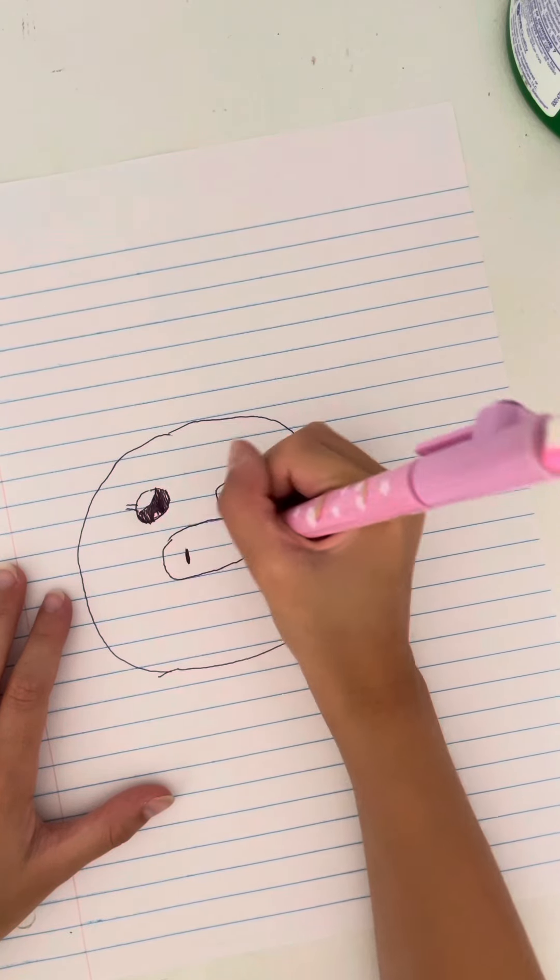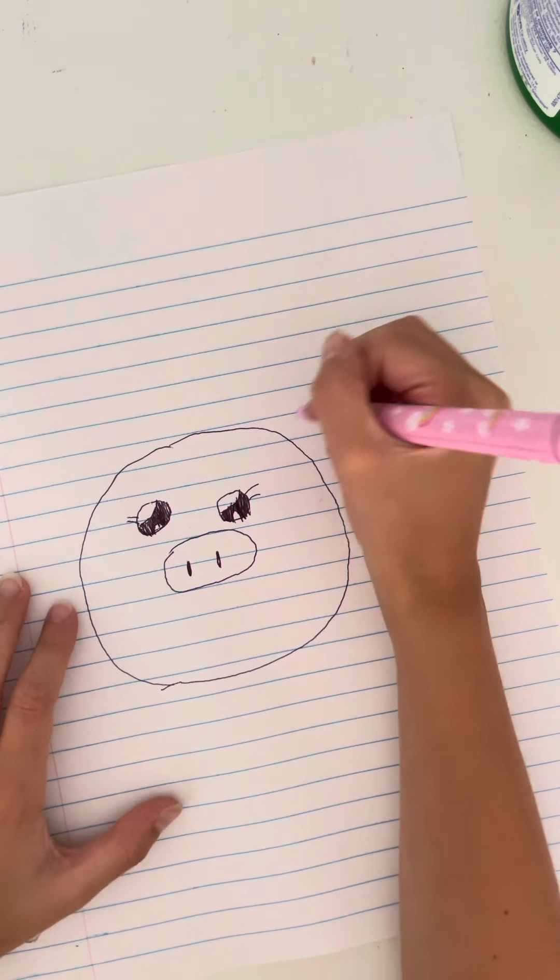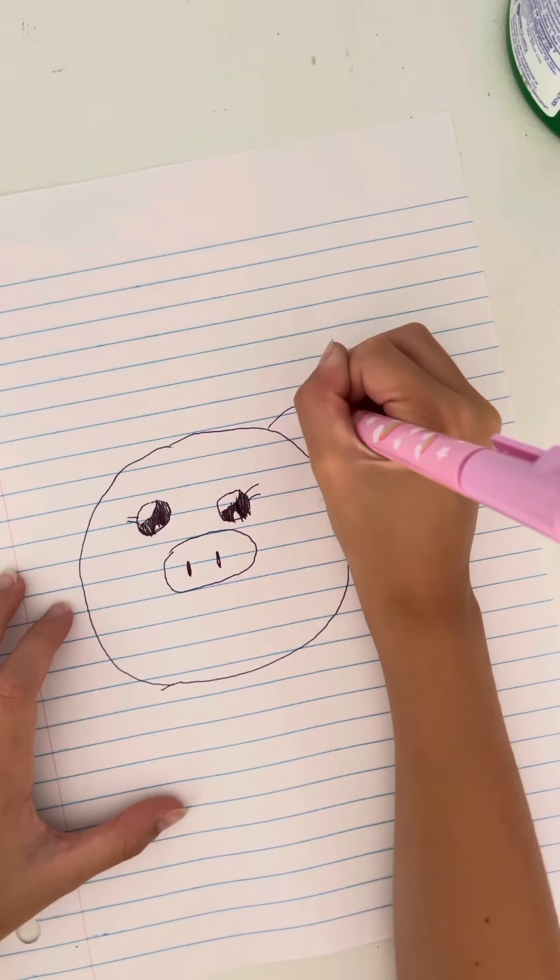One circle and a two circle. Then we're gonna draw the ears, they kind of slant this way.